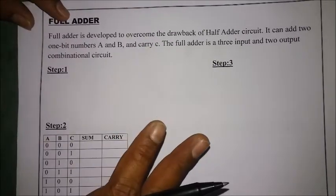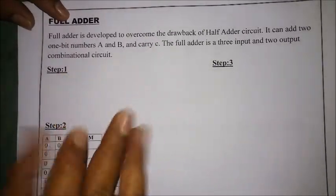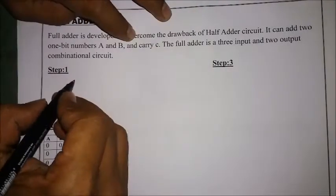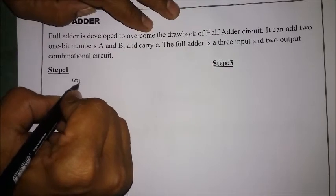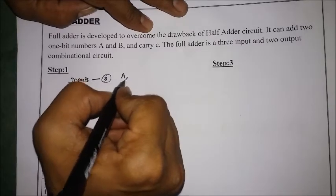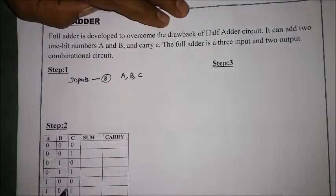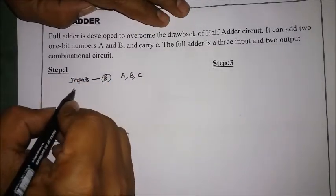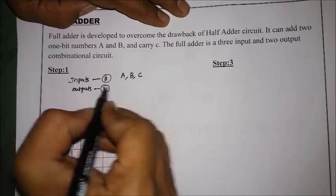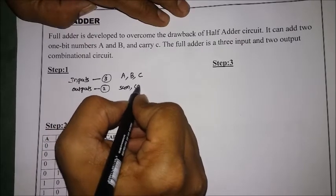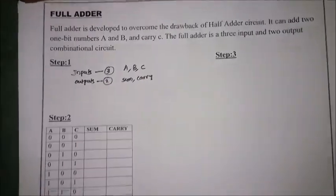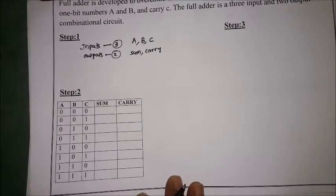In my previous case I added only two bits, but here I am going to add three bits. Step one: identify the number of inputs and outputs. The inputs are three — A, B, and C — and the outputs are two: sum and carry.